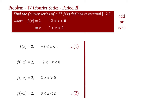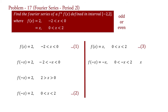Now take the second part of the function. That is, f(x) equal to x for 0 less than x less than 2. Say equation 3. Take x equal to minus x. Therefore, f(minus x) equal to minus x for 0 less than minus x less than 2. Change the sign of inequalities and sign of all quantities of the interval.